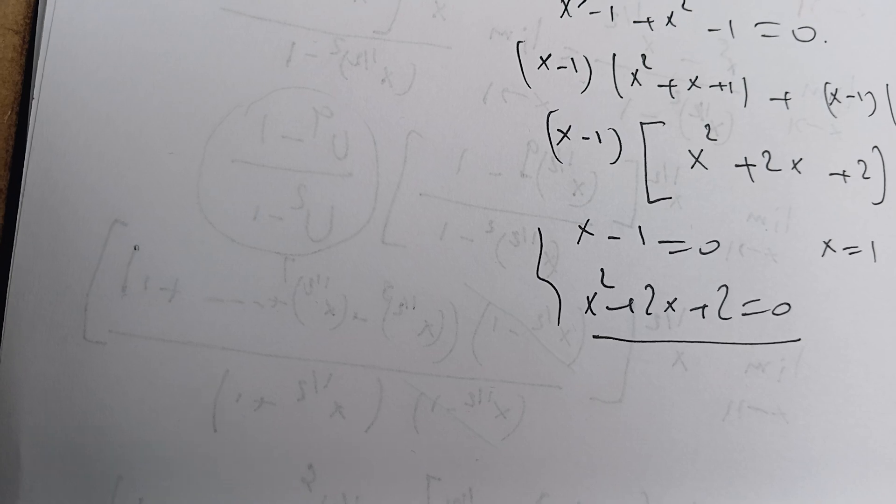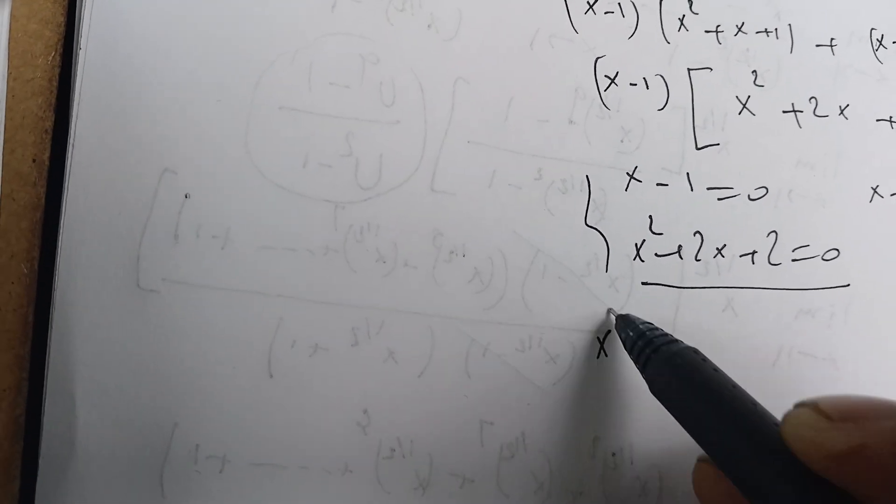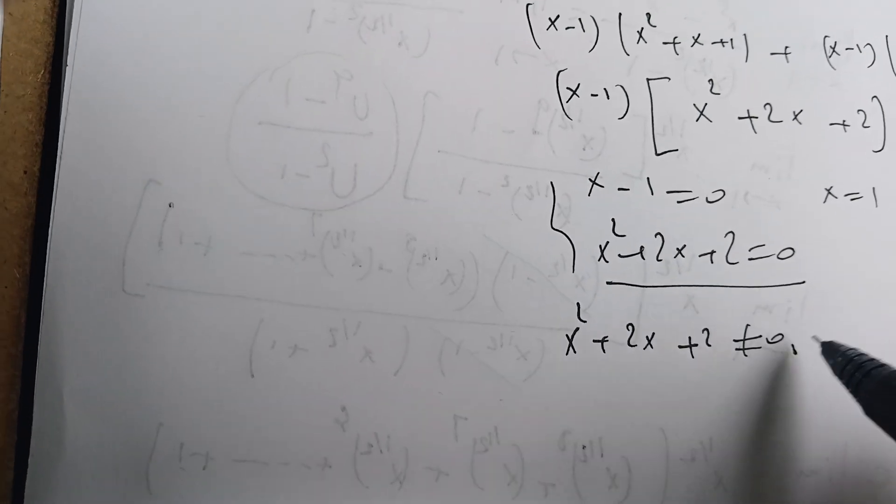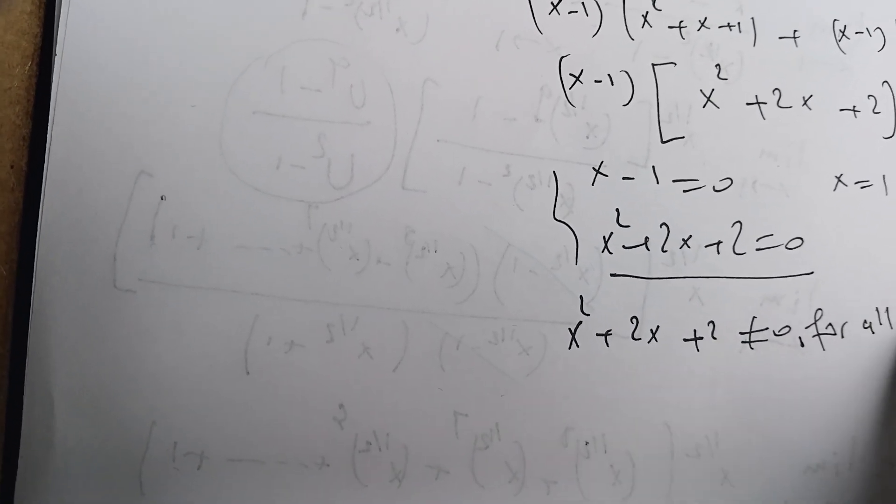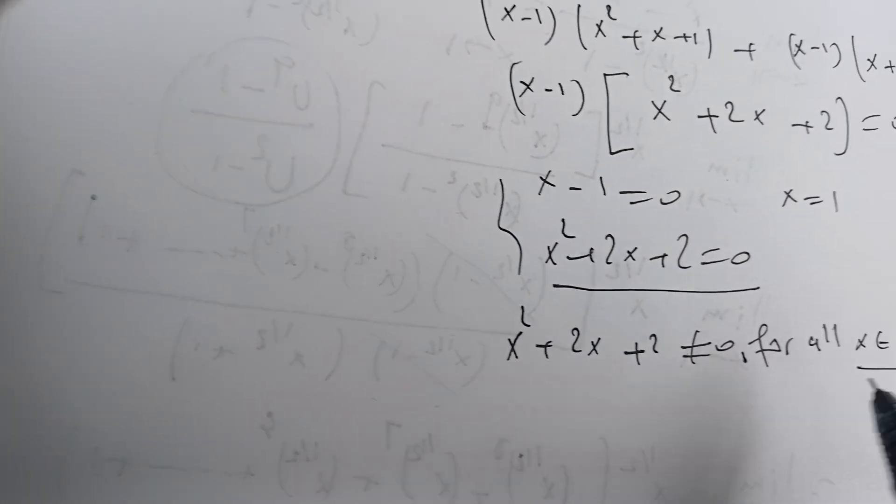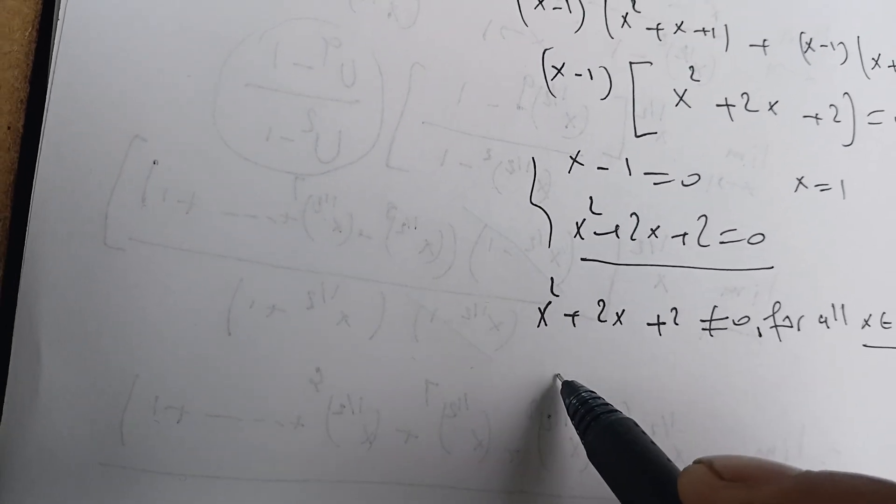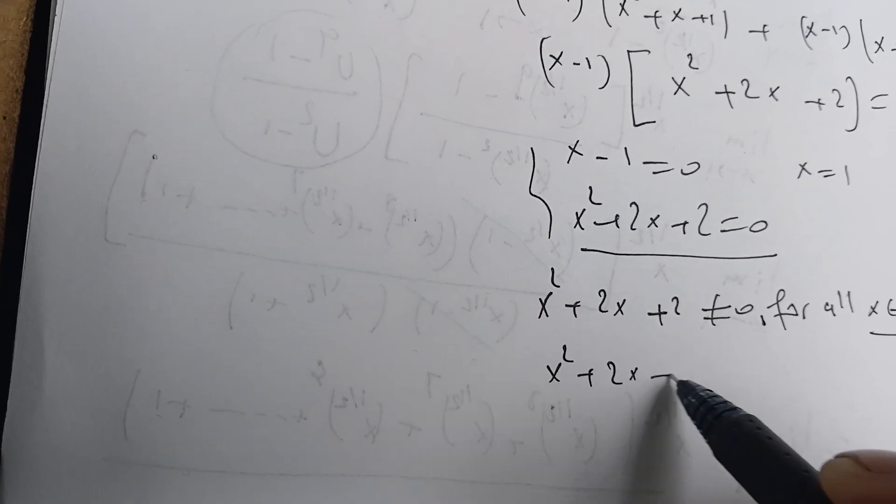Is it equal to 0? It's never equal to 0. Why? Because we see that x squared plus 2x plus 2 is different from 0 for all x in R, every real number.